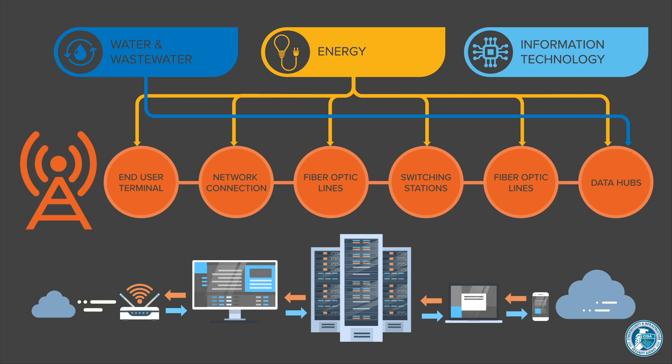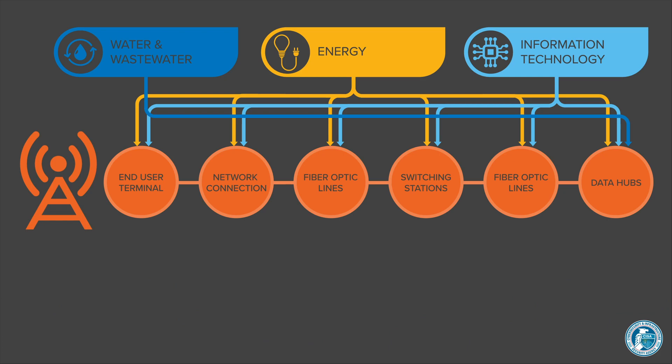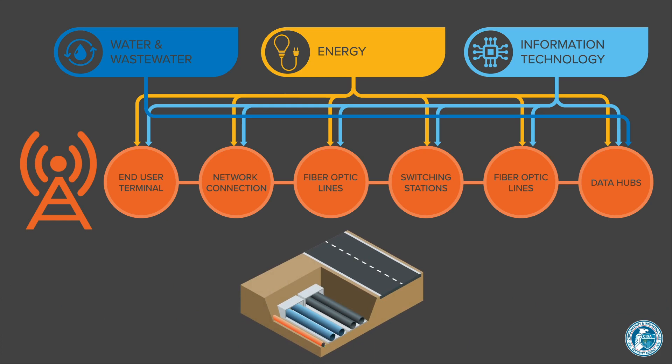Importantly, these networks cannot operate without the information technology sector, which provides not only the applications we use, but also supports the routing and management of data requests. Fiber optic networks also provide an excellent example of geographic dependencies. Fiber optic cables often share rights of way with water, electric and gas systems along road networks. A single hazard could disrupt access to all of these simultaneously.